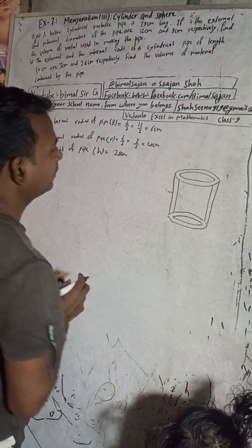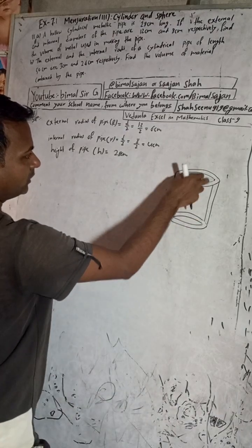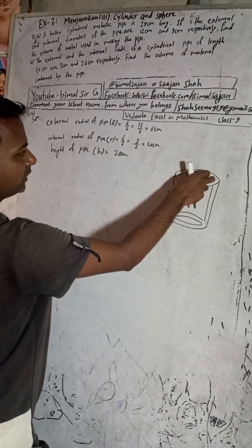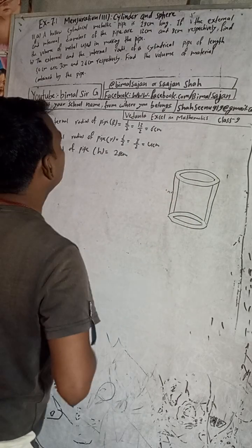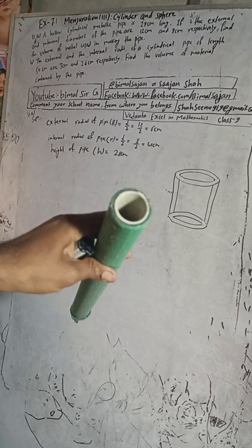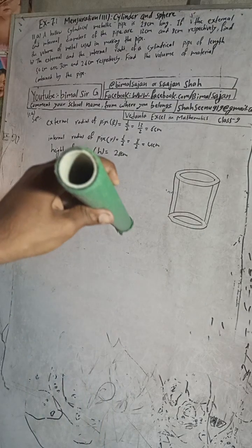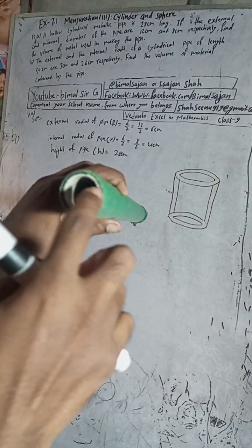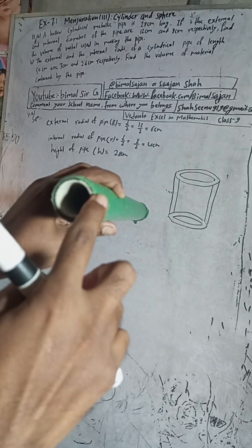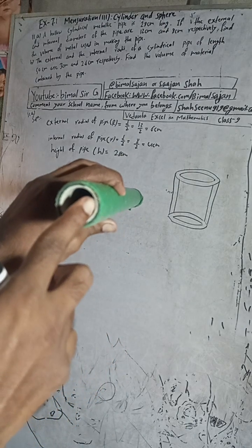This is a hollow cylindrical metallic pipe. Hollow means this part in the middle is empty — there is no material there. I will show you the pipe. See, this is a hollow metallic pipe. The external radius means from center to the outside, and the internal radius means from the center up to the inner wall of the pipe.